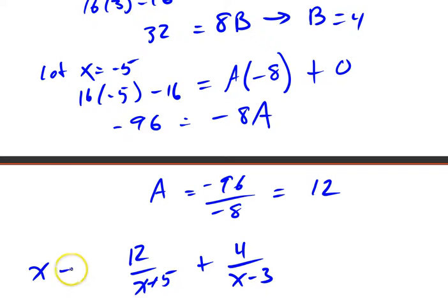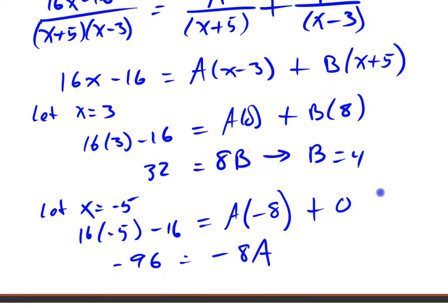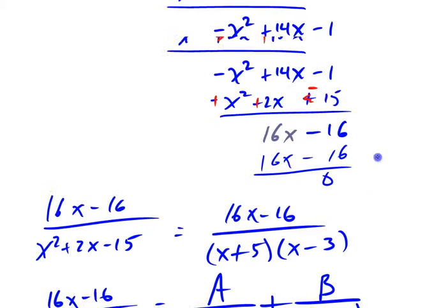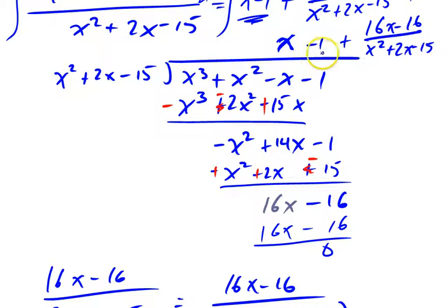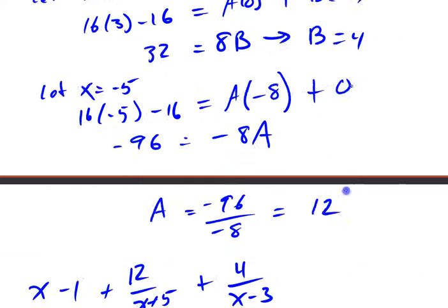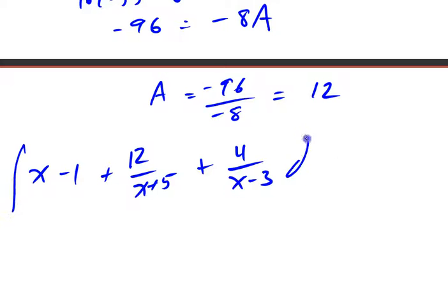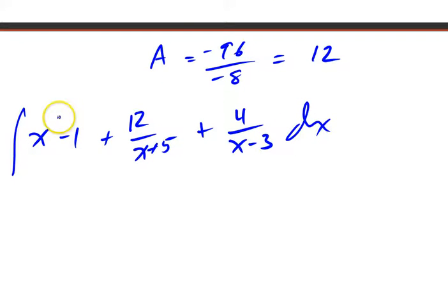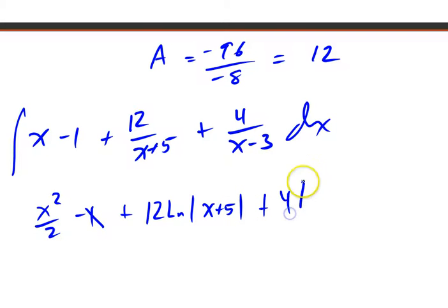I also have the x minus 1 that we got when we did long division. It was x minus 1 plus this fraction. We've now rewritten this fraction. So the integral of this original thing with the cubic numerator and the quadratic denominator is equal to the integral of all of this stuff. This one is just x² over 2 minus x. This one, you're going to do a u substitution with u equal the bottom, 12 over - so I'm going to end up with 12 times the natural log of the absolute value of x plus 5. And here, I'm going to end up with 4 times the natural log of the absolute value of x minus 3 plus the constant.